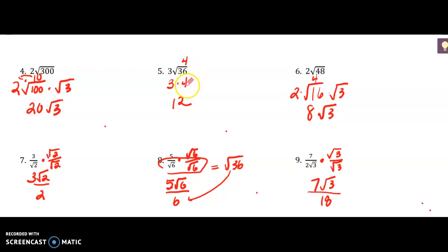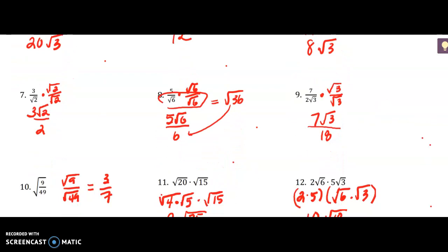Number 6: the largest perfect square factor of 48 is 16. It goes in 3 times, so 2 times the square root of 16 times the square root of 3. Then I multiply the 4 times the 2 to get 8, so it's 8 square roots of 3.